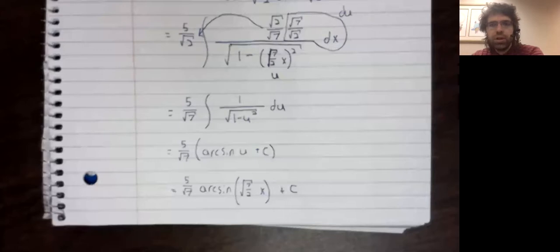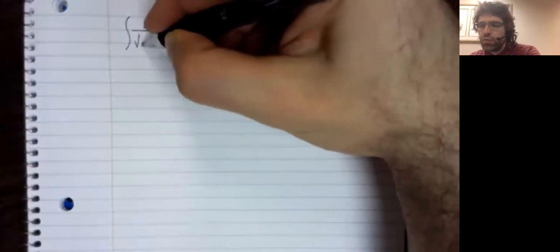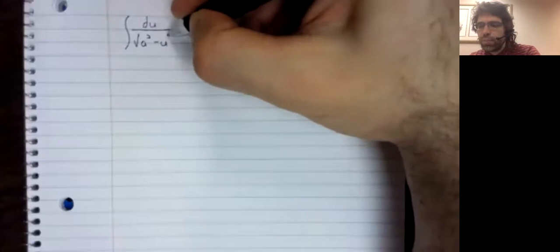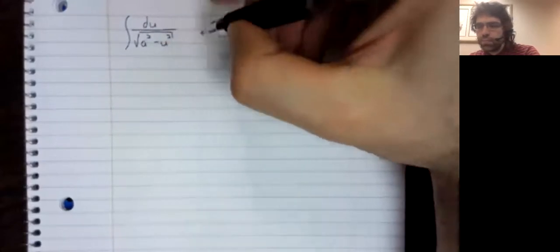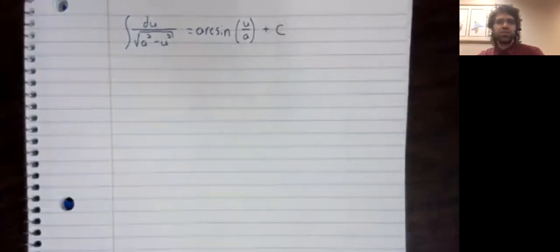The book gives us a summary of this whole process. It gives us the following: the indefinite integral of du over the square root of A squared minus u squared is the arc sine of u over A, plus our constant of integration.